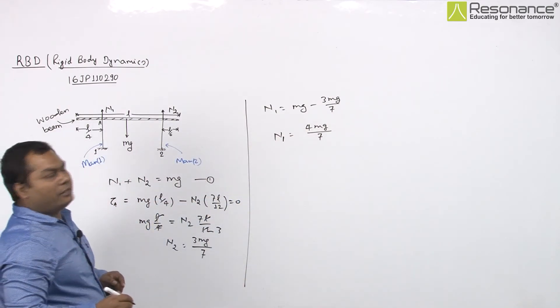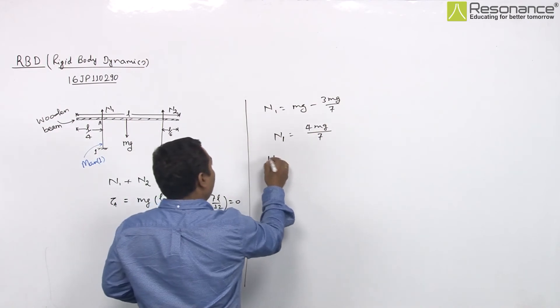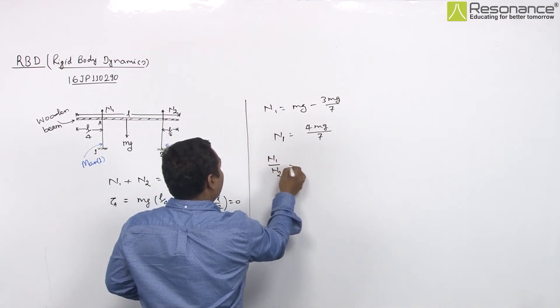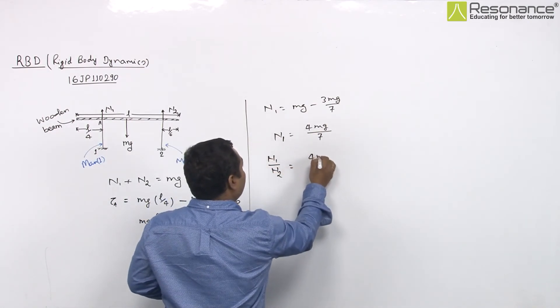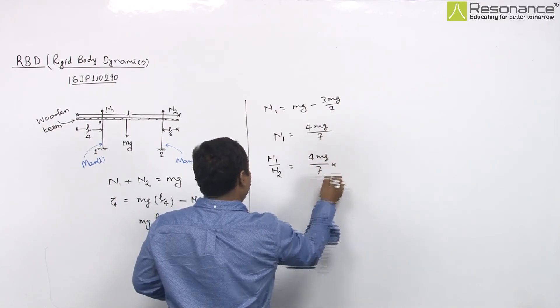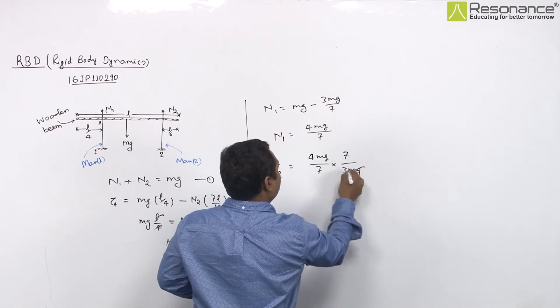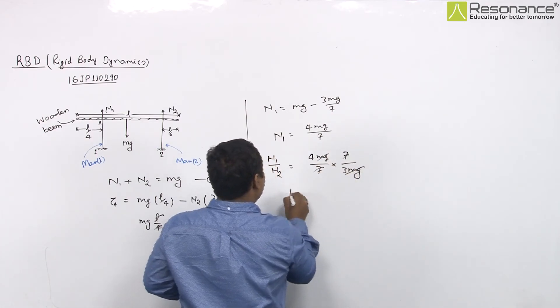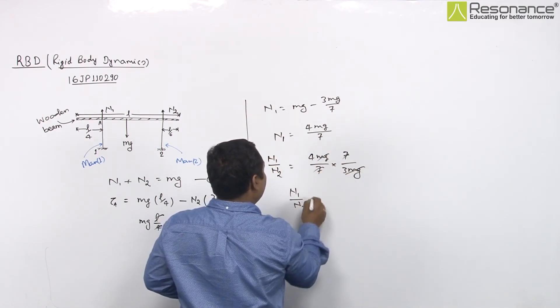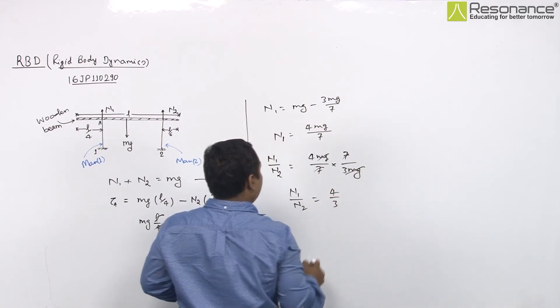In this question it is asking for the ratio of N1 and N2. The ratio will be 4Mg/7 times 7/3Mg. Mg cancels out, so N1/N2 is 4/3.